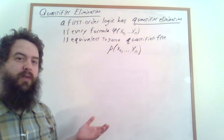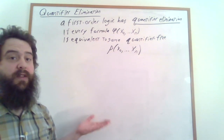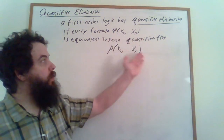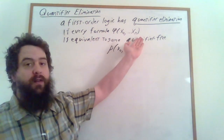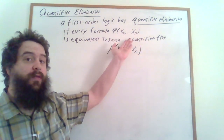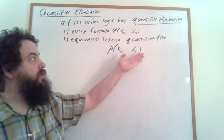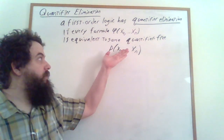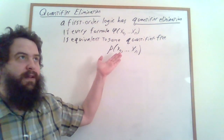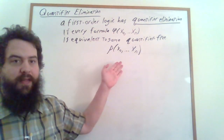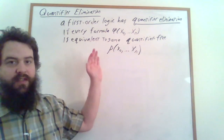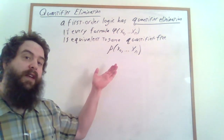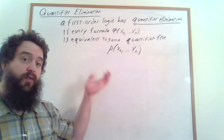We need a way of really understanding what's true and what's false in this particular theory. The hope is that if we have some sort of algorithm for turning any formula into a corresponding quantifier-free formula, and we feed that algorithm a sentence — a formula with no free variables — that algorithm should spit out a corresponding quantifier-free, free-variable-free formula, and then we can just analyze whether or not that's true. So having a quantifier elimination procedure gives us a really good handle on deciding what sentences are true and false.